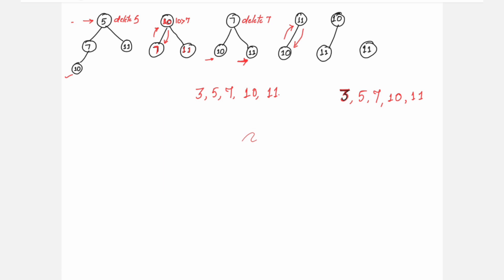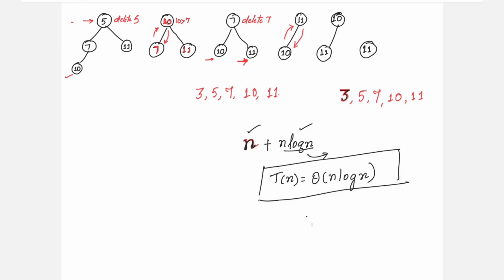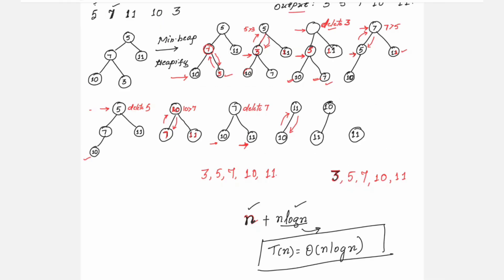Regarding time efficiency, there are two main operations. First, constructing the heap for n elements takes O(n) time. Second, deleting an element takes O(log n), so deleting n elements takes O(n log n). The total time is n plus n log n. Taking the higher-order term, the time efficiency for this algorithm is Θ(n log n) for all cases — best case, average case, and worst case.